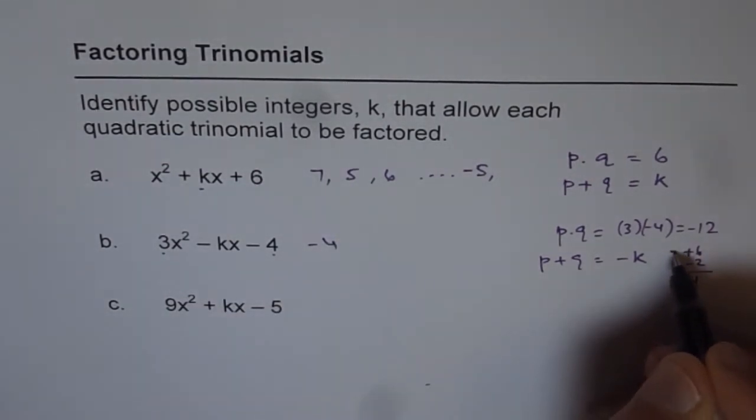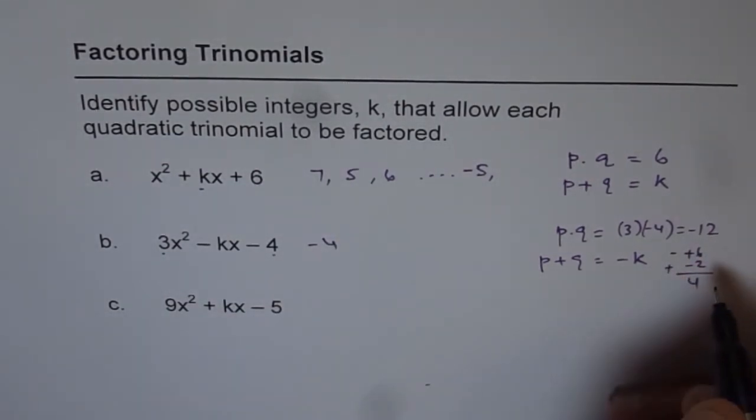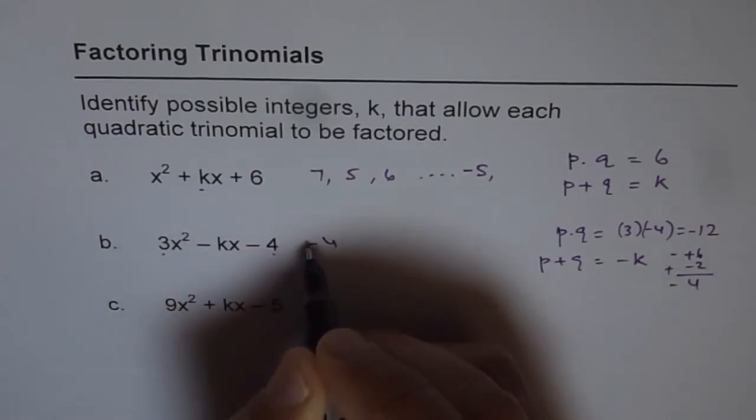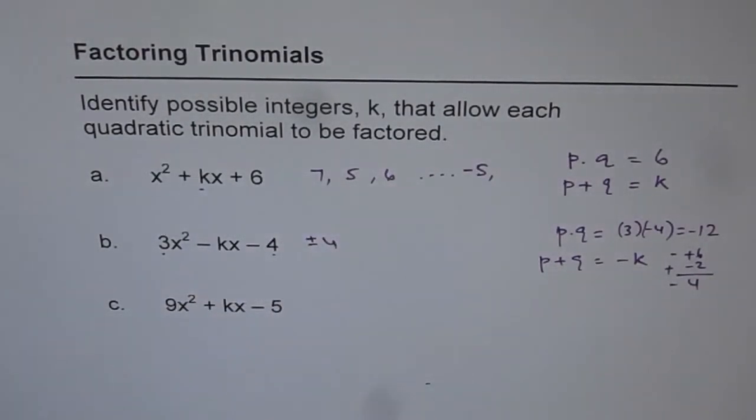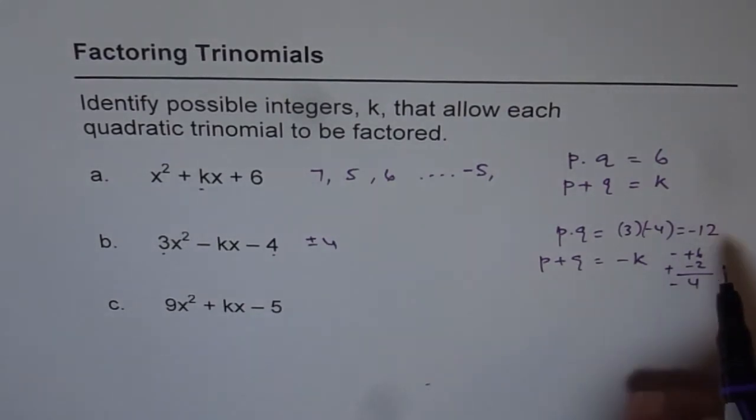If I would have taken this as minus and this as plus, in that case, adding them up will give me minus 4. So I could have k as plus or minus 4. So like this, we can have so many combinations.